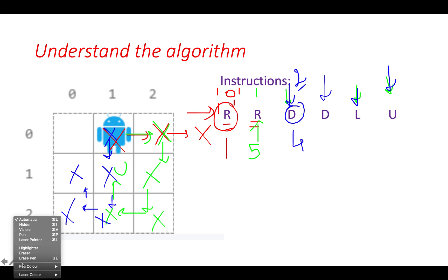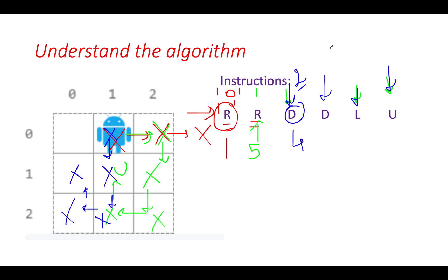For the next iteration starting from index 3, the first instruction is D so the robot moves down. Next is L, it moves left. Then U, it moves up. The robot successfully executed 3 instructions, so the answer for index 3 is 3.